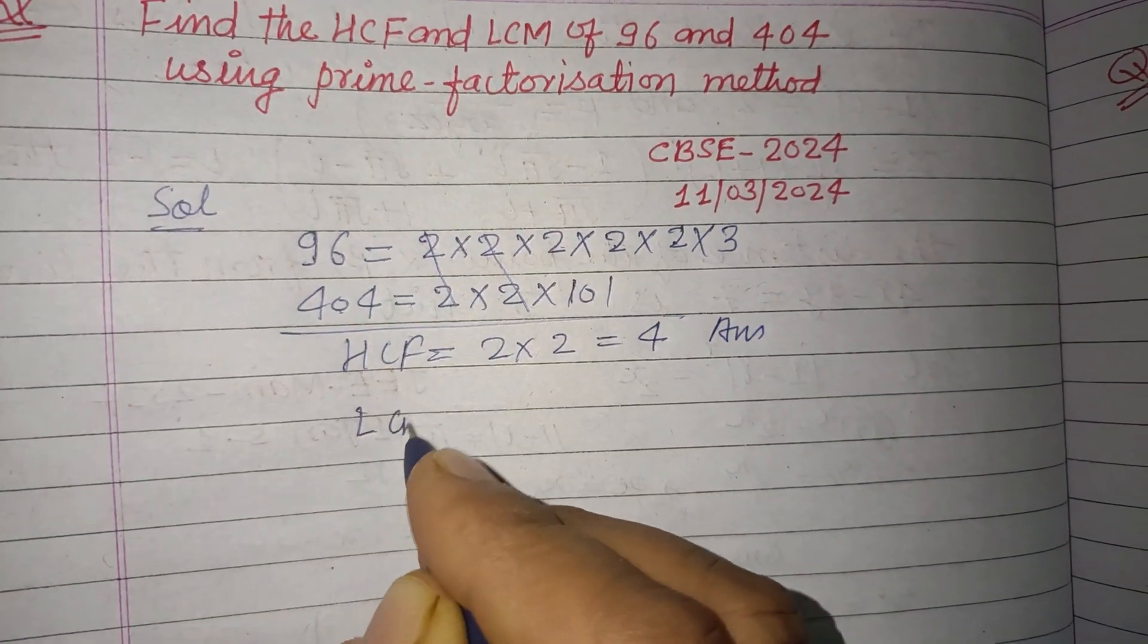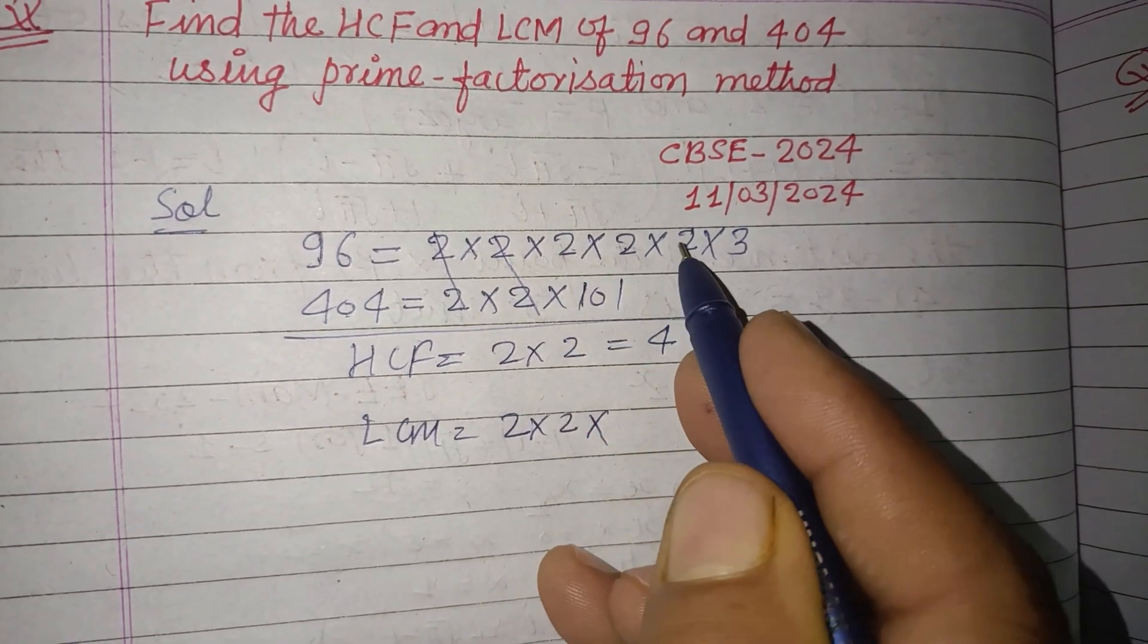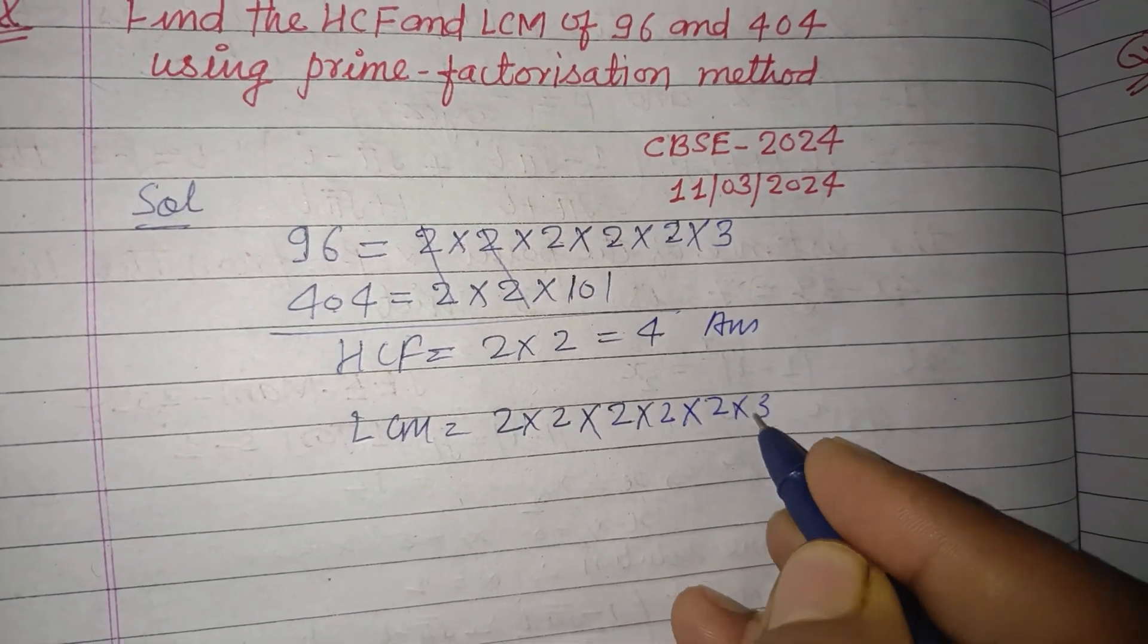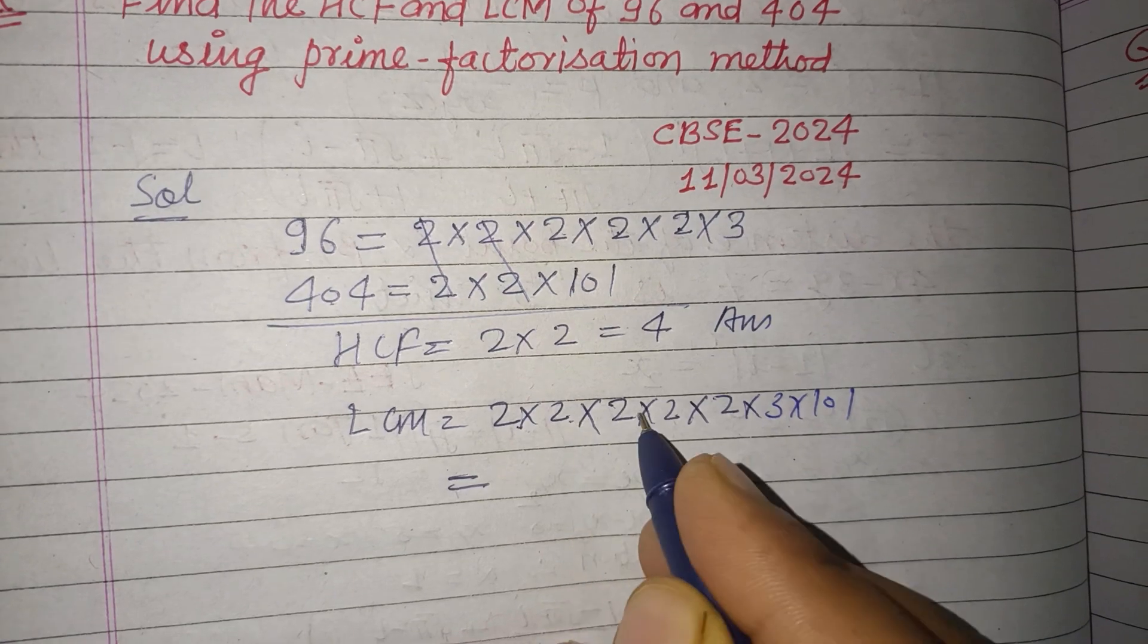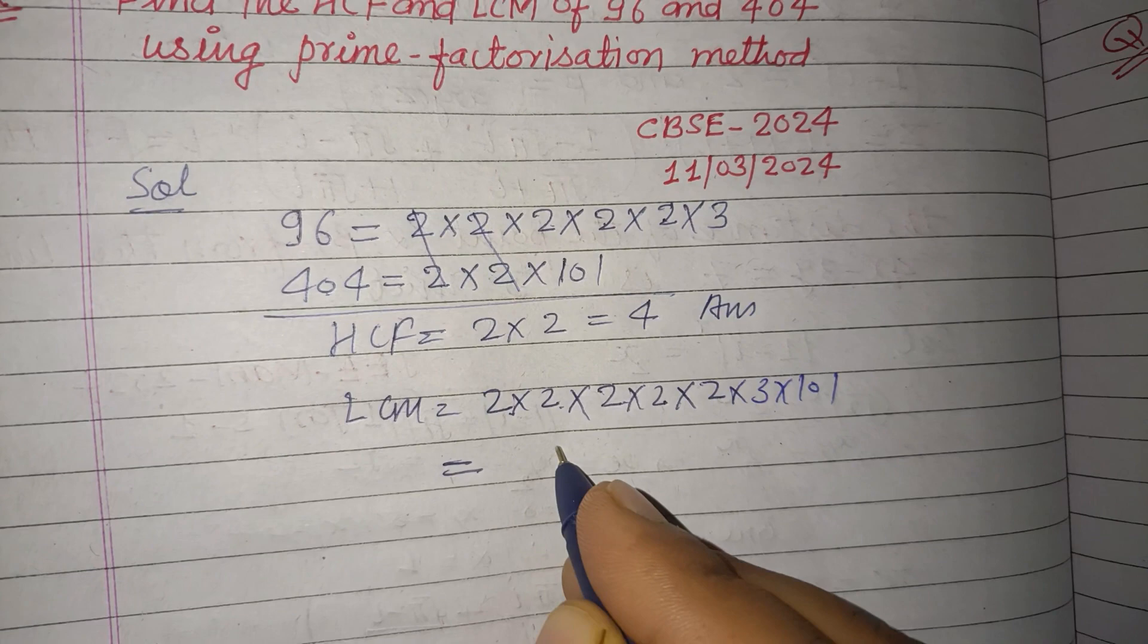Now LCM. 2 into 2 is common, so we take other parts. 2 times 2 times 2 times 2 times 3 times 101. So 2 times 2 is 4, times 2 is 8, times 2 is 16, times 2 is 32.